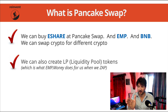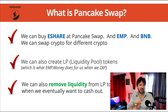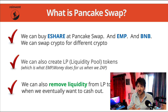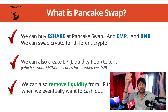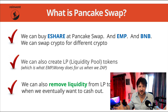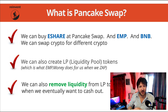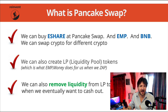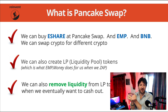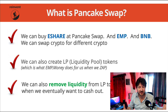We can also remove liquidity from our LP tokens if we eventually want to cash out. Imagine you have got some liquidity tokens in the farm earning you passive income — eventually you might want to take everything out of the farm and cash the whole thing out, particularly if the liquidity tokens have gone up in value. To remove the liquidity, we take out the liquidity tokens from EMP.money and then use PancakeSwap to do the whole zap feature in reverse, manually breaking them into 50% EMP and 50% Ethereum, which would then sit in our MetaMask.